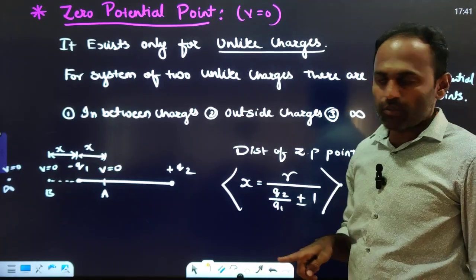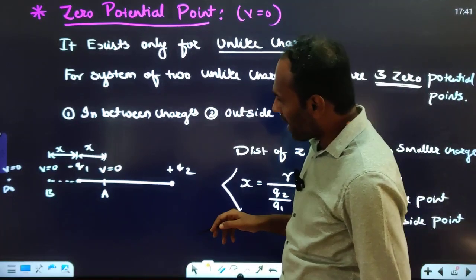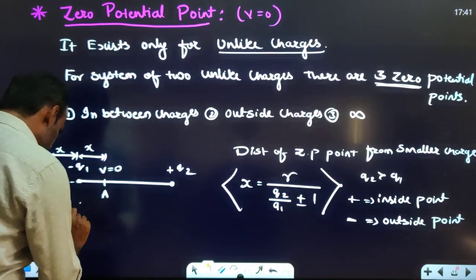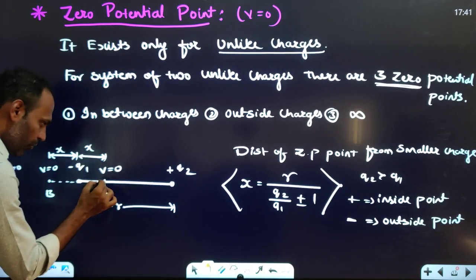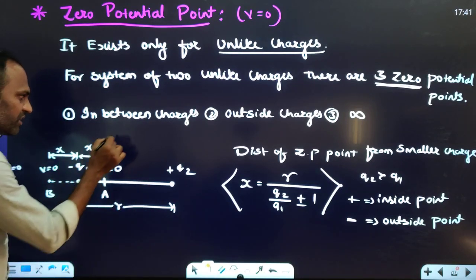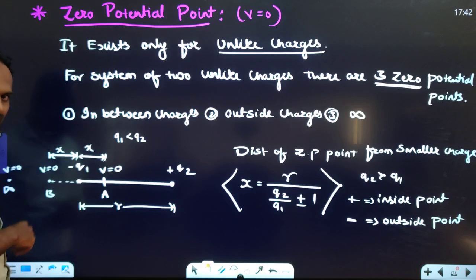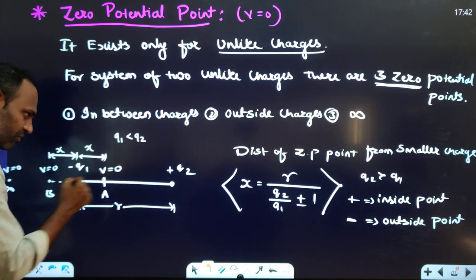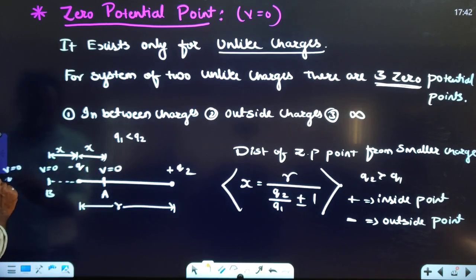For a system of two unlike charges, say −q₁ and +q₂ separated by distance R: one zero potential point is in between the two charges, close to the smaller charge; one zero potential point is outside the system, also close to the smaller charge; and one is at infinity. The neutral point (zero electric field) is only one, while zero potential points are three.